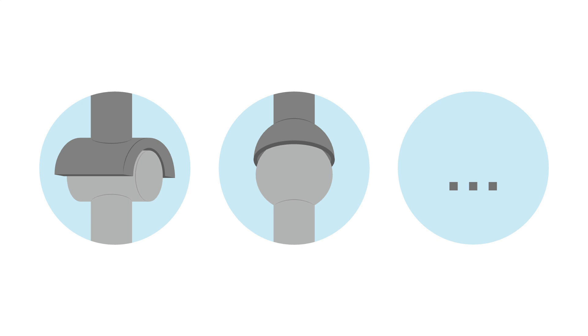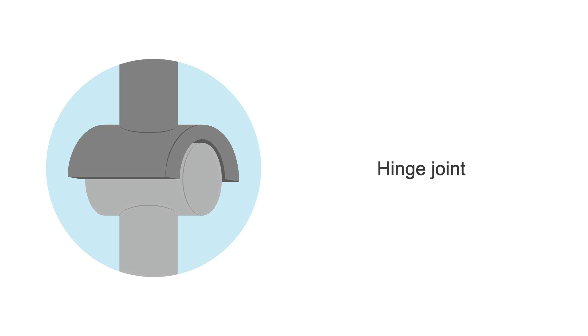Depending on the configuration of each joint, different types of movements are allowed. For example, a hinged joint where one articular surface is convex and the other one is concave can only be moved in flexion or extension. Examples include the elbow, the knee, and the ankle.